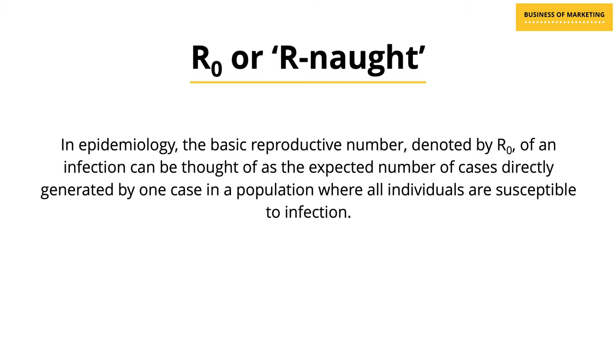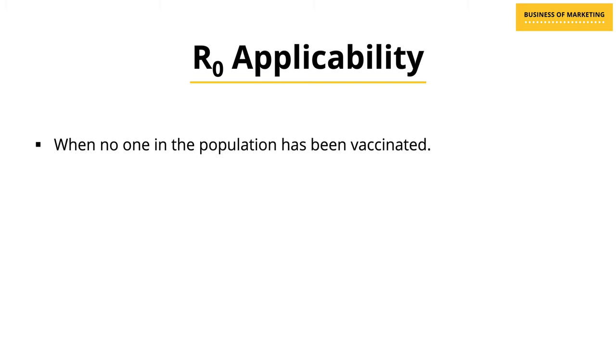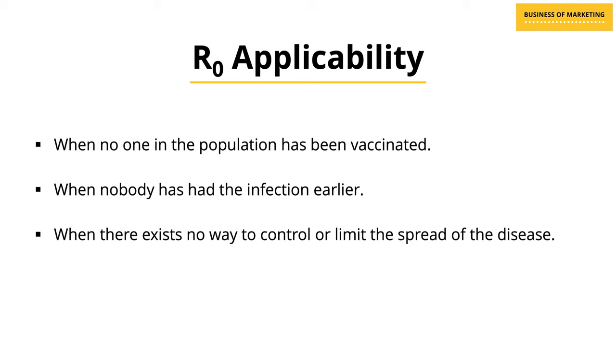So let's dive straight into the world of epidemiology to understand what exactly is R0. The basic reproductive number, denoted by R0, of an infection can be thought of as the expected number of cases directly generated by one case in a population where all individuals are susceptible to infection. It is important to note that the value of R0 is applicable only when three conditions are met: when no one in the population has been vaccinated, when no one has had the infection earlier, and when there exists no way to control or limit the spread of the disease.